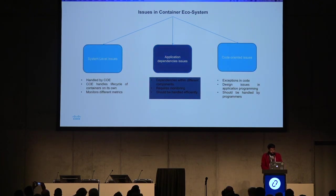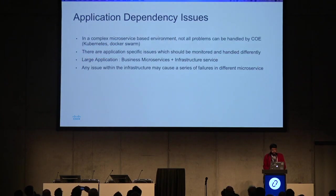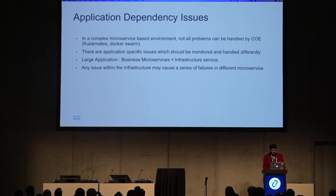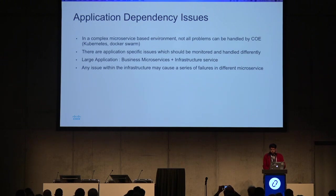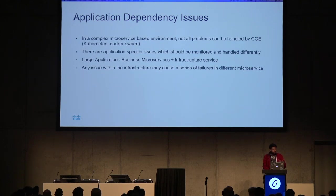Application dependency issues are not handled by the container orchestration system. They need to be monitored differently, and there are many tools available for this. When we talk about a large application, it is made up of not only business microservices but also many infrastructure services — monitoring tools, databases, message queues, etc. Any failure in any of these places can cause a cascading effect, resulting in failures seen across all services.